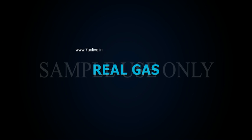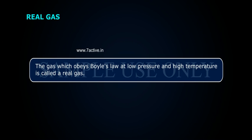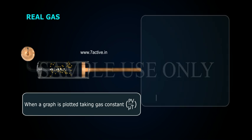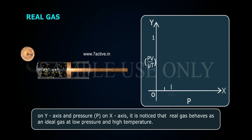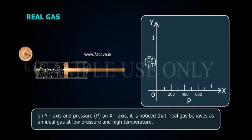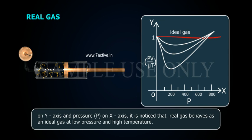Real gas. A gas which obeys Boyle's law at low pressure and high temperature is called a real gas. When a graph is plotted taking PV/μT on the Y-axis and pressure P on the X-axis, it is noticed that real gas behaves as an ideal gas at low pressure and high temperature.